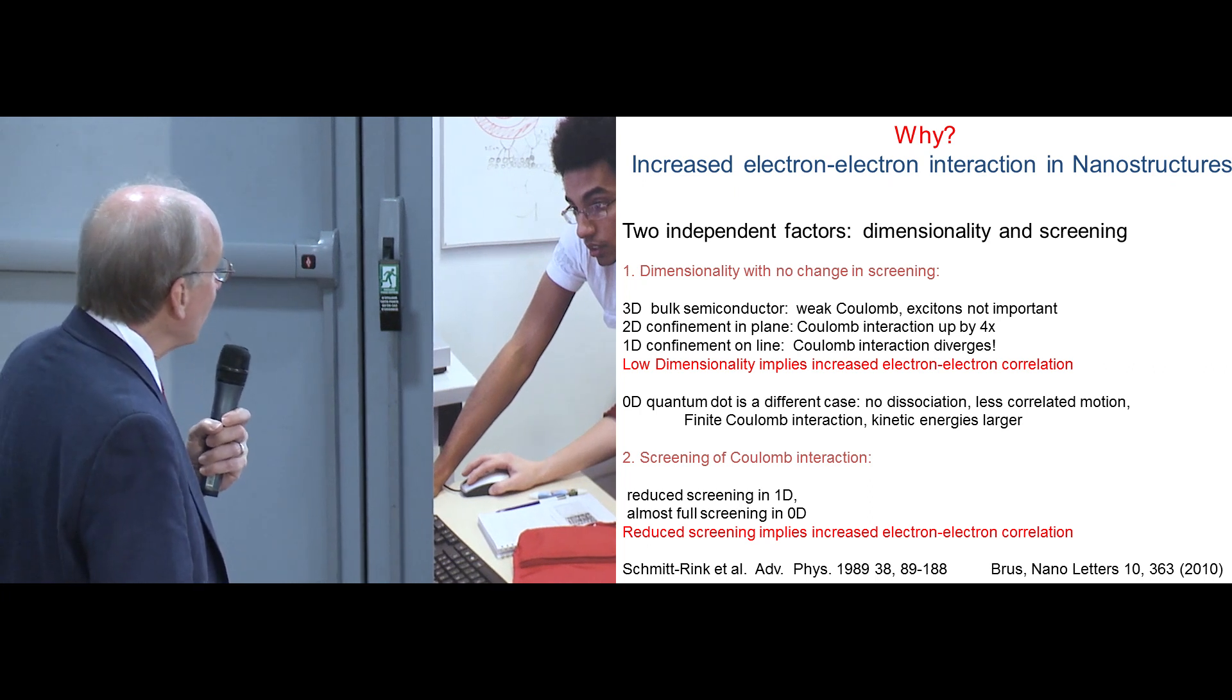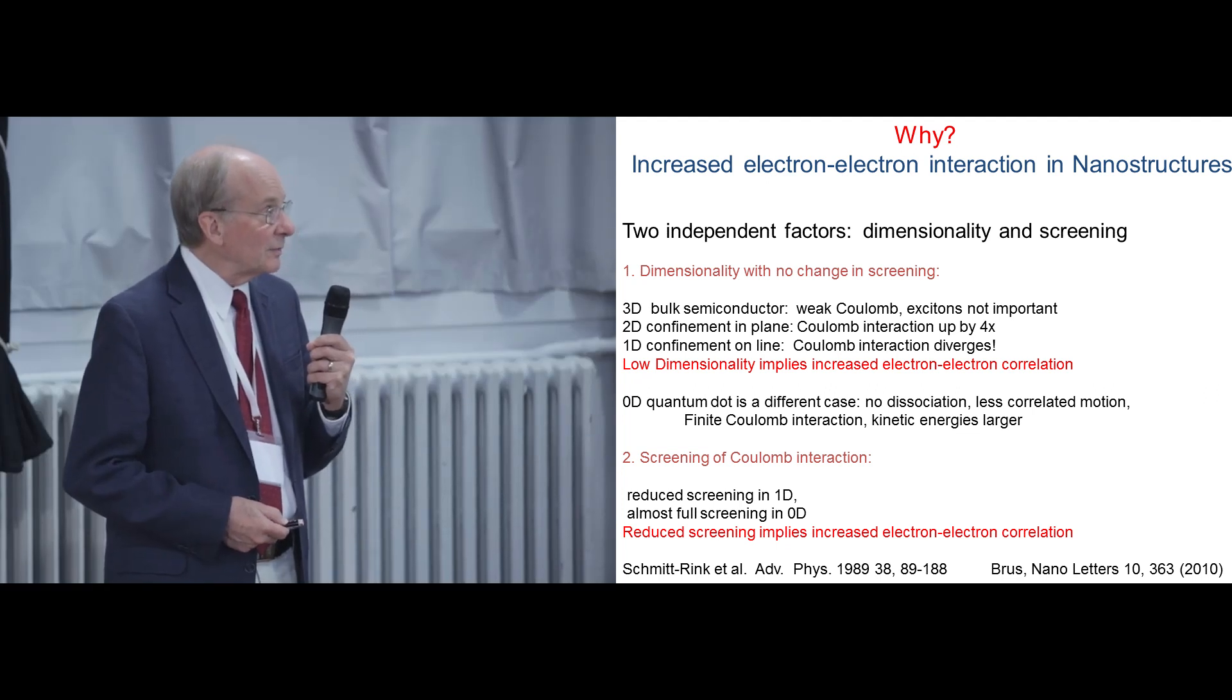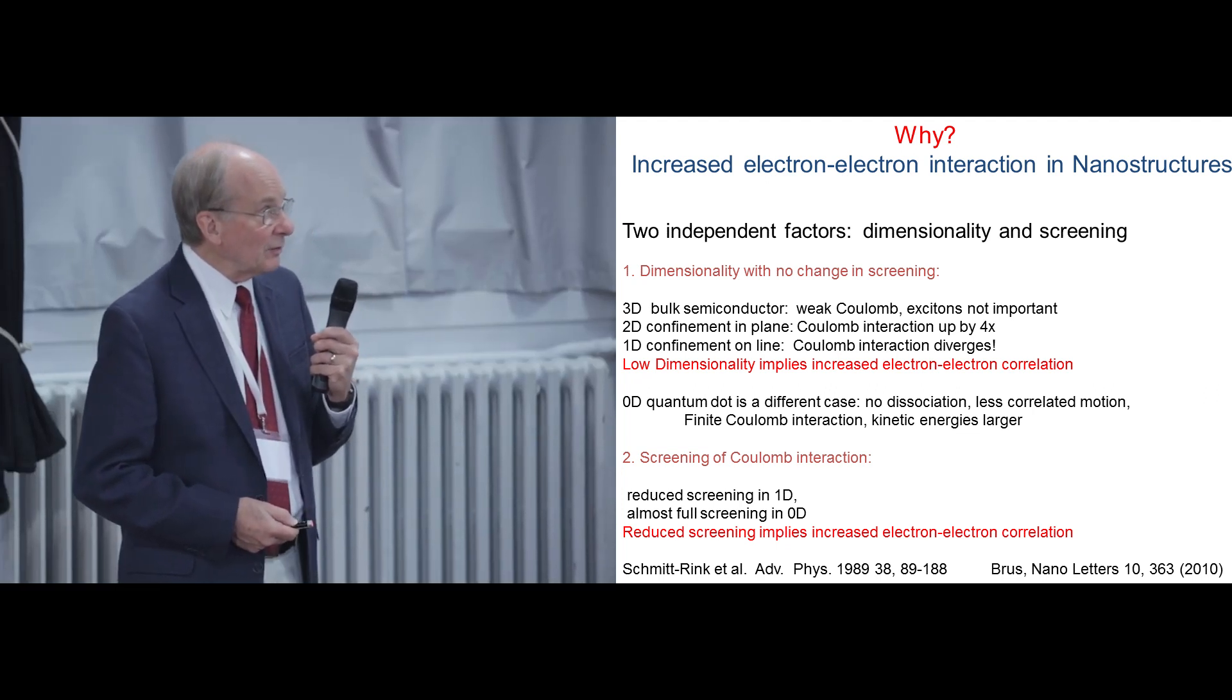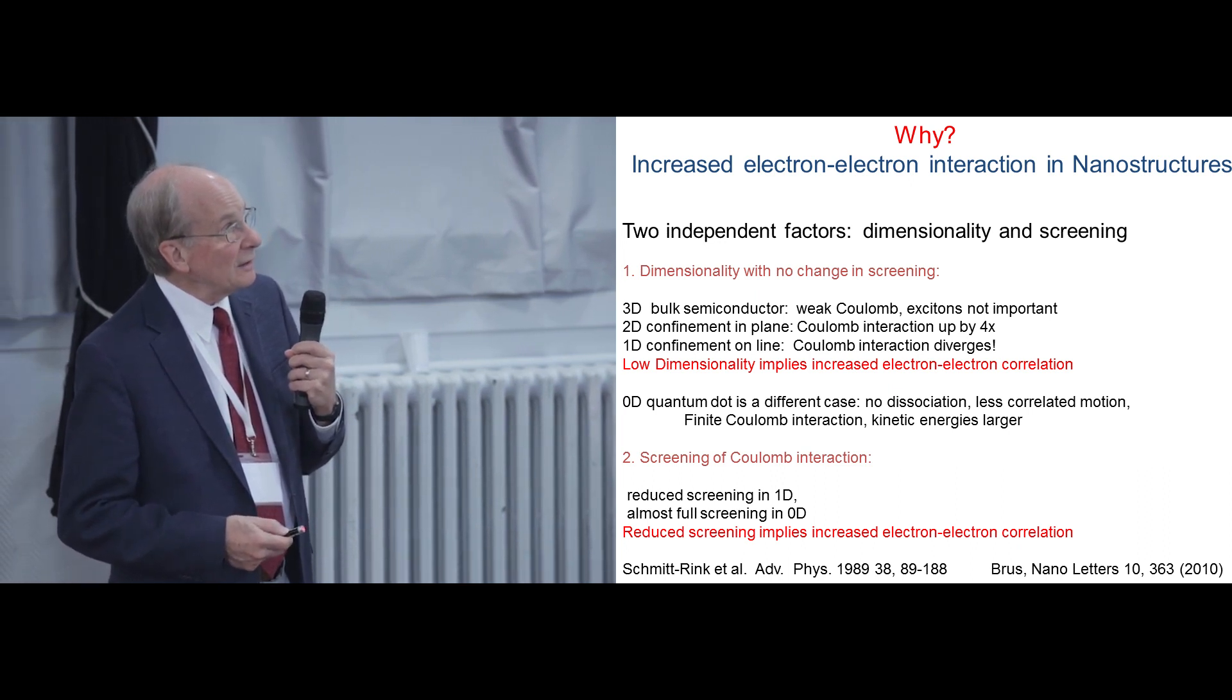At the time when quantum wells were first invented, the gallium arsenide system, Schmidt-Rink, Stephen Schmidt-Rink began to think about this, and there are two independent factors. One is dimensionality, the other is screening. So there's this marvelous thought experiment that you can do if you have a three-dimensional semiconductor, say, gallium arsenide, and normally an exciton motion in gallium arsenide is a three-dimensional exciton, and it's strongly screened. The dielectric constant is somewhere around 10.